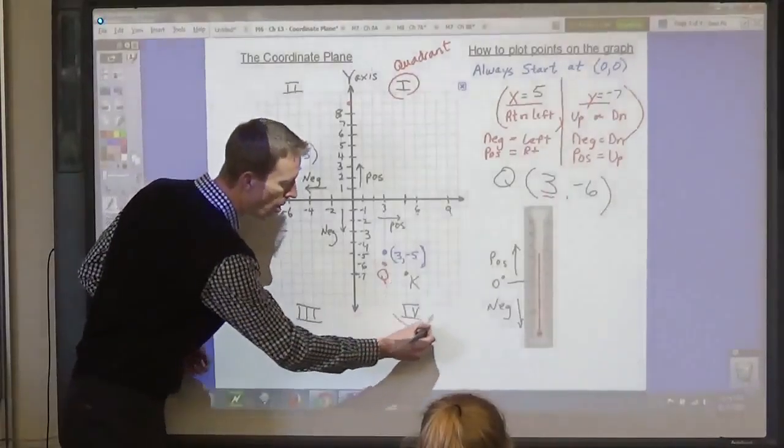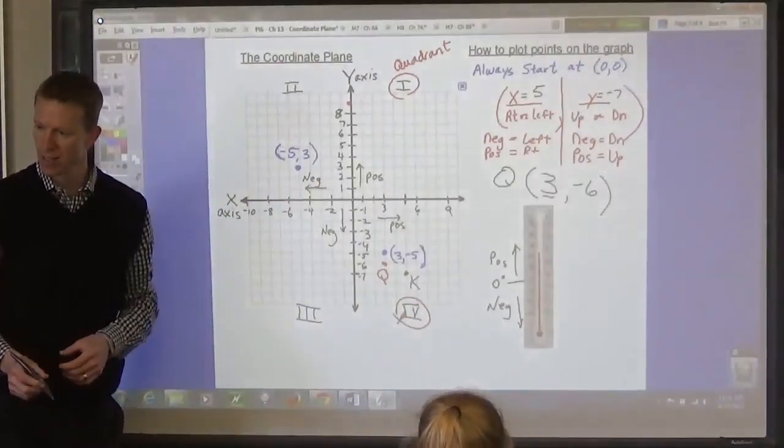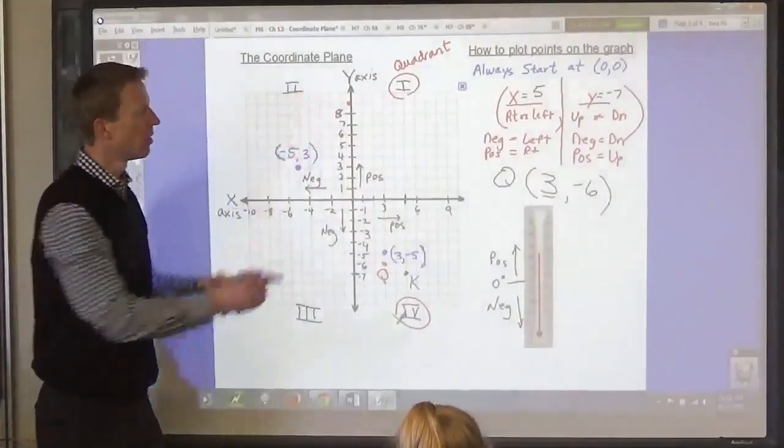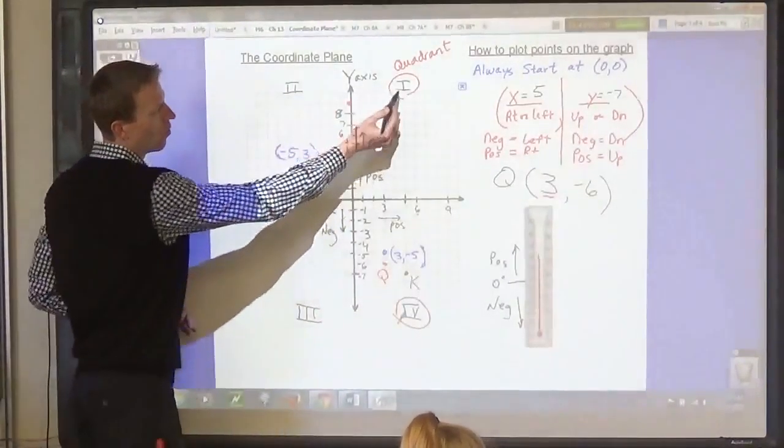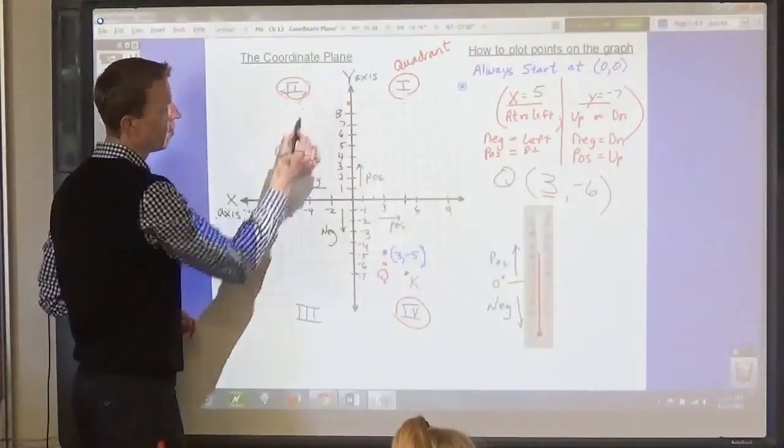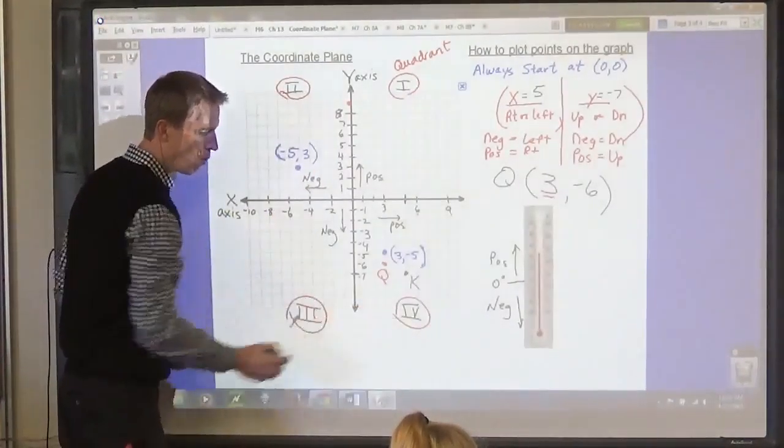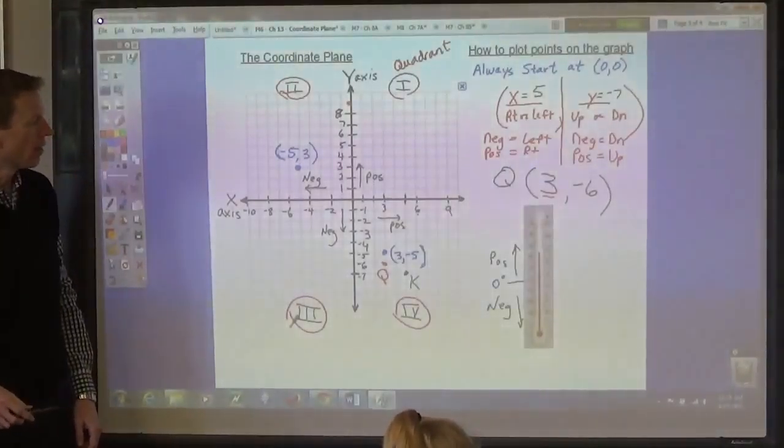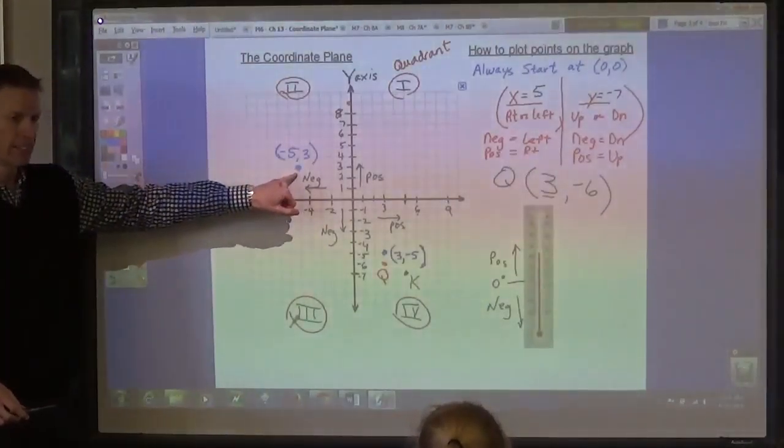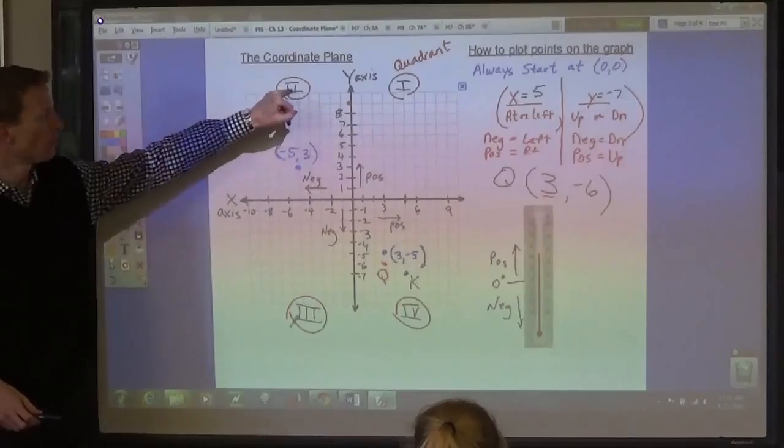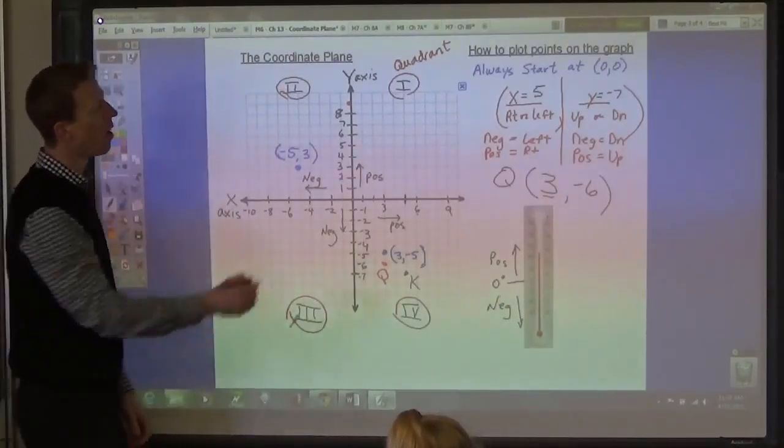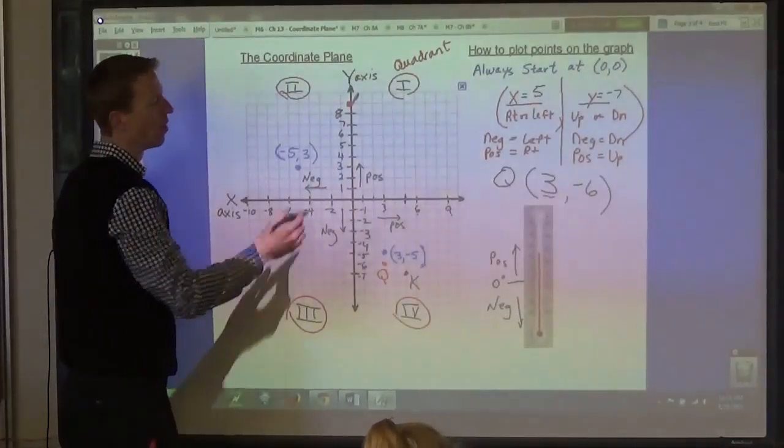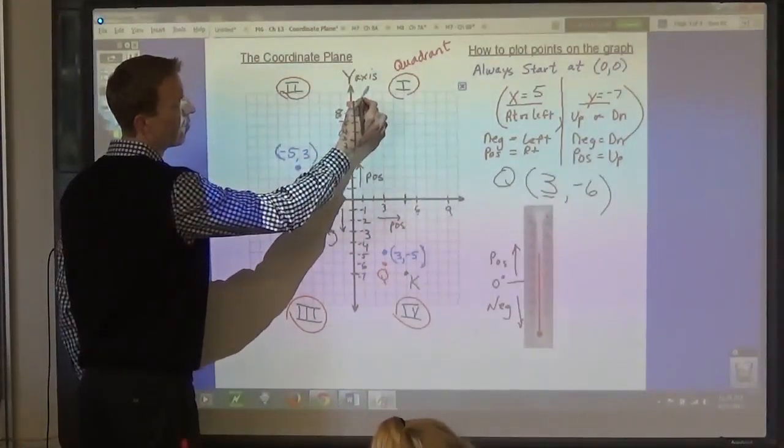Now, which quadrant is point Q in? Quadrant 4. That's marked by these Roman numerals. The quadrants are labeled in Roman numerals, and they go counterclockwise: 1, 2, 3, 4. So if it asks you, what quadrant is this point in? You would say quadrant 2. What quadrant is this point in?